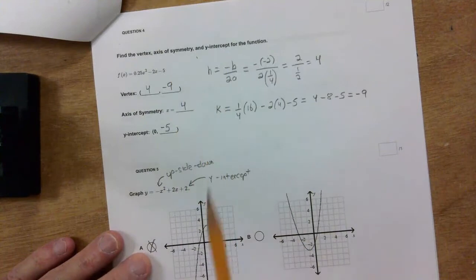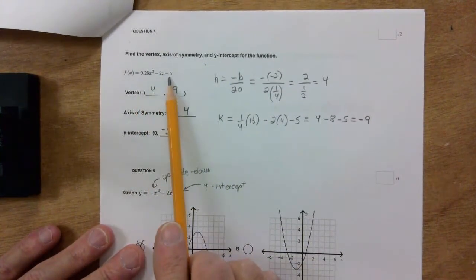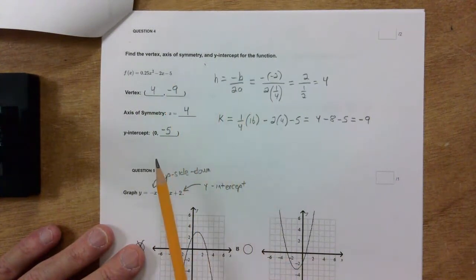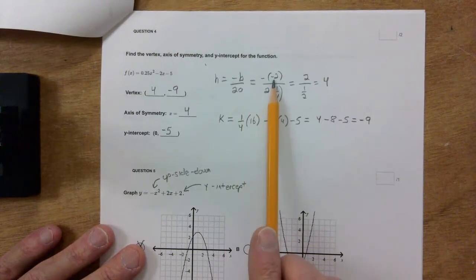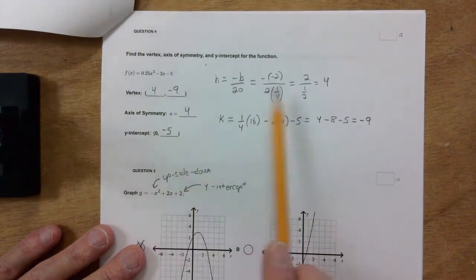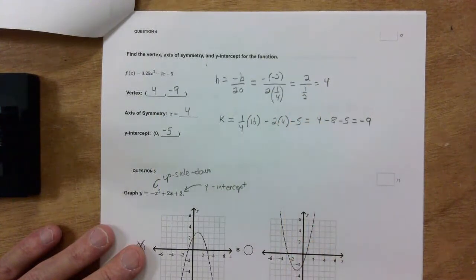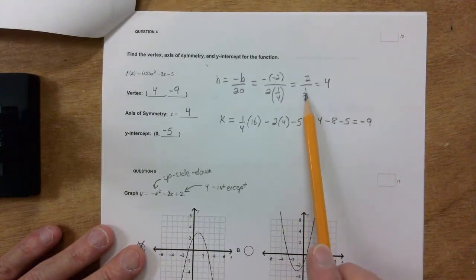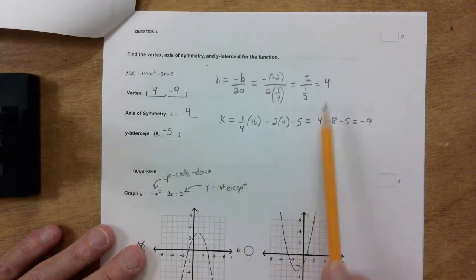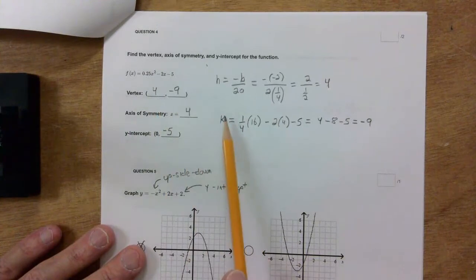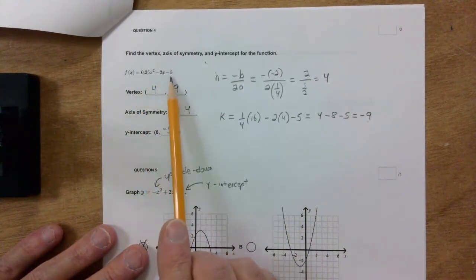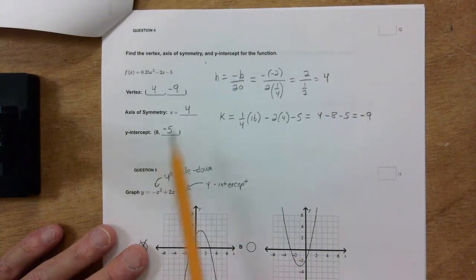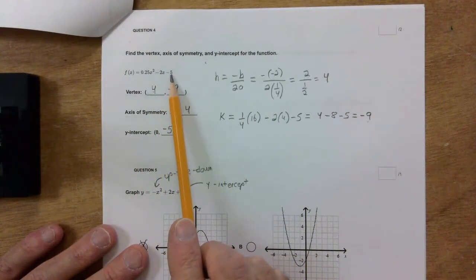For number 4, find the vertex, axis of symmetry, and y-intercept. This is in standard form, so we use negative b over 2a to find h, the x-coordinate of the vertex. Here b is negative 2 and a is 0.25, so I get h = 4 — there are 4 halves in 2. Plugging 4 in for x gives k = negative 9, so the vertex is (4, negative 9). The axis of symmetry is x = 4, and the y-intercept you can read directly as negative 5.